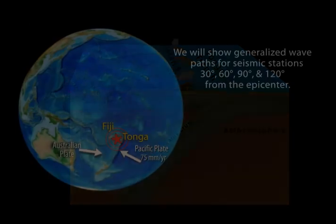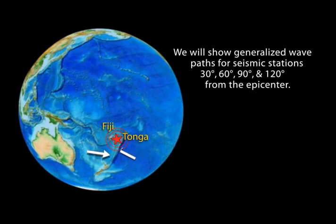Now we'll look at a cross section of the earth to see how the seismic waves travel from the hypocenter of the earthquake to increasing distances away.